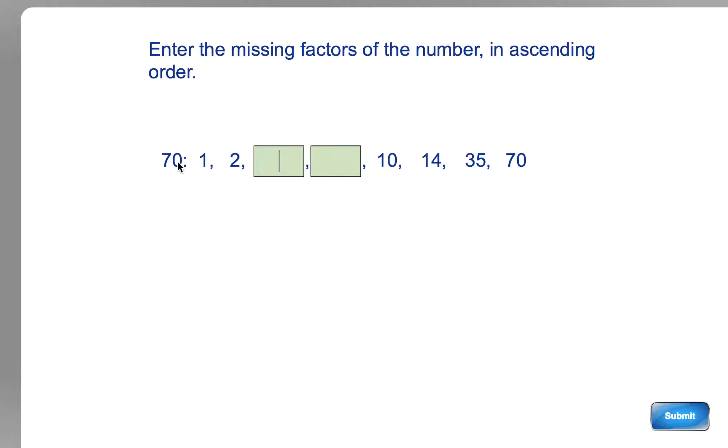So multiples and factors go together. Multiple is the answer, in this case 70, and the factors are the two numbers you can multiply together to get to 70.